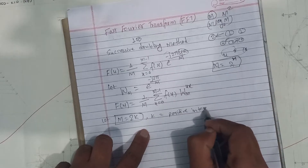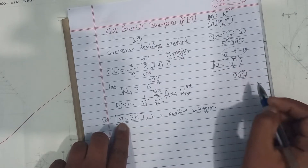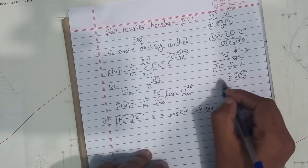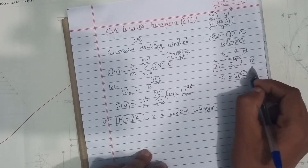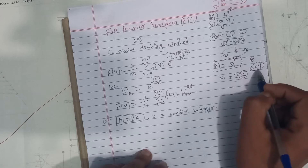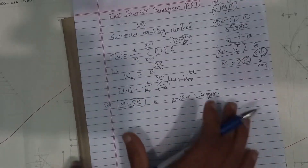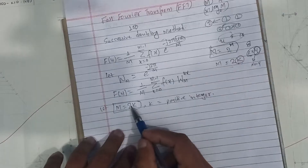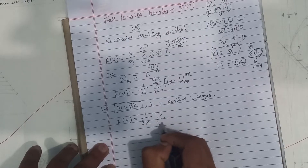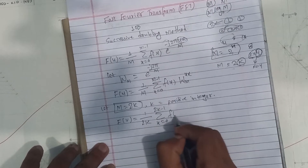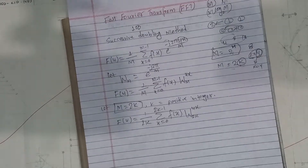N must be a positive integer. Obviously, we have N equals 2 to the power k. For example, if N is 8, then 8 equals 2 to the power 3, so k equals 3. We have N equals 2k. Now we are going to replace this in the equation.